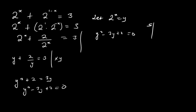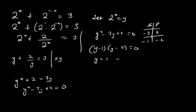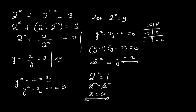Using the sum and product technique: sum is negative 3, product is 2. The factors are negative 1 and negative 2. So we get (y minus 1)(y minus 2) equals zero, giving y equals 1 or y equals 2. Substituting back — 2 to the x equals 1 means x equals 0, and 2 to the x equals 2 means x equals 1. Verifying x equals 0: 2 to the 0 plus 2 to the 1 equals 1 plus 2 equals 3. Verifying x equals 1: 2 to the 1 plus 2 to the 0 equals 2 plus 1 equals 3. Both hold true.